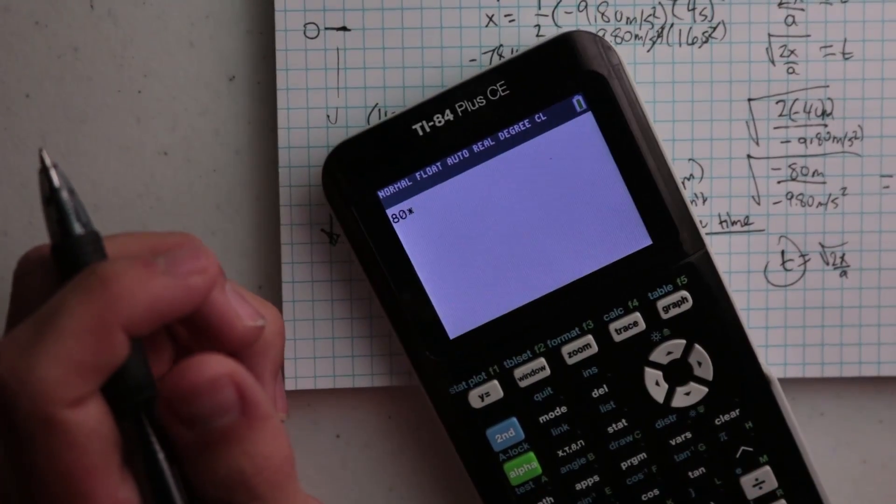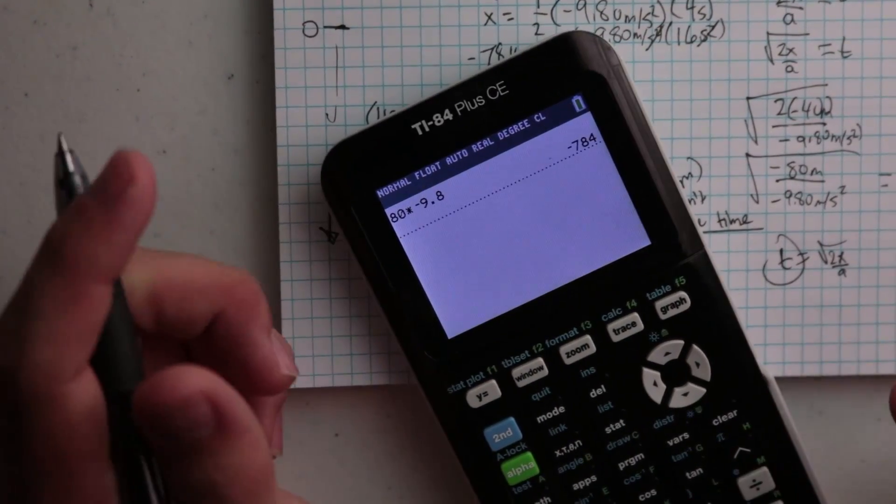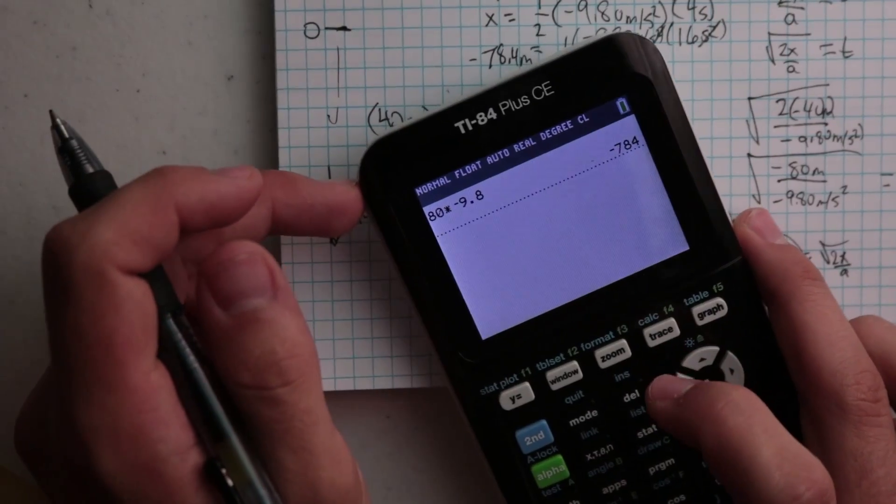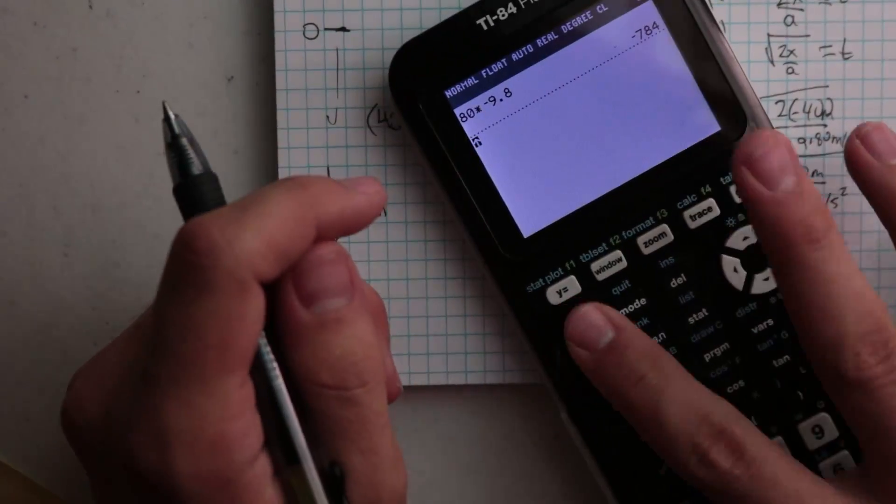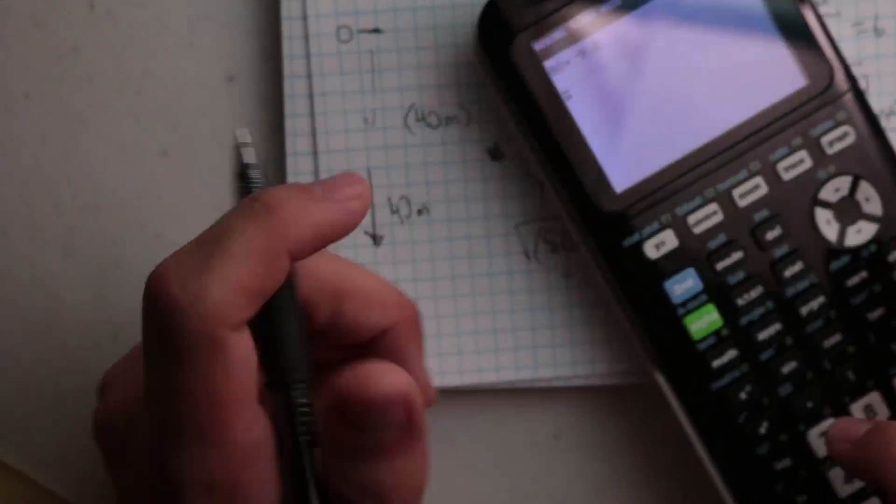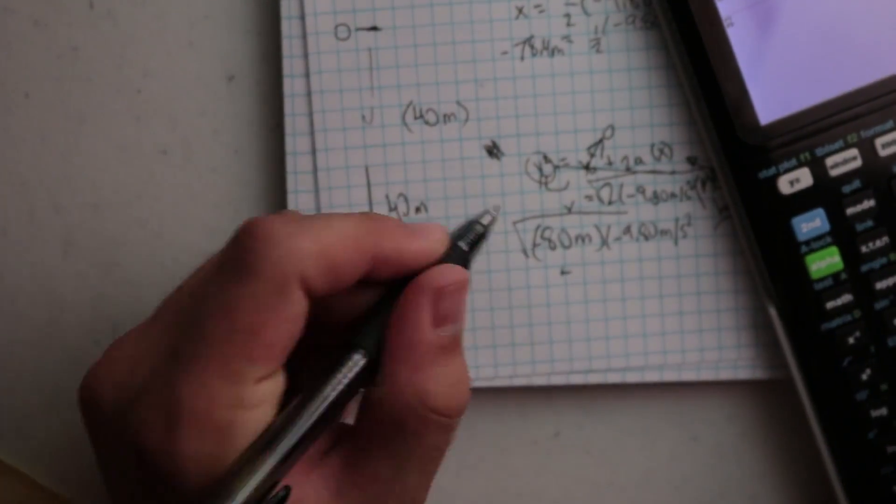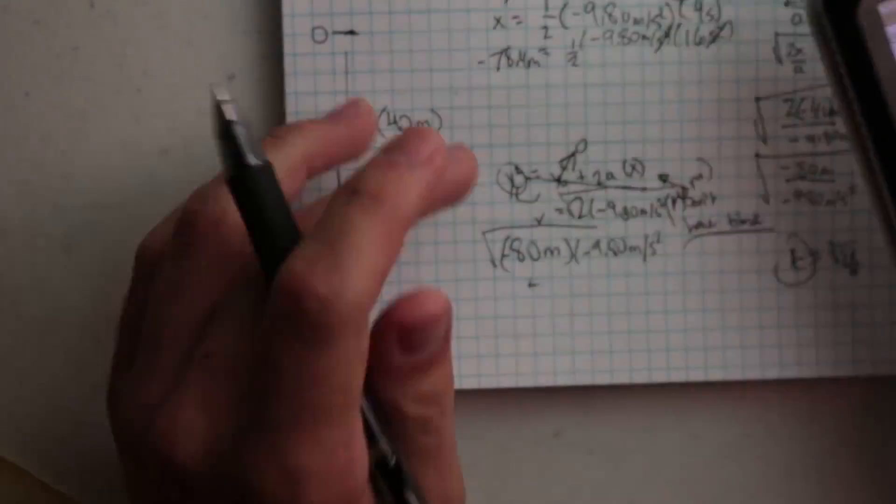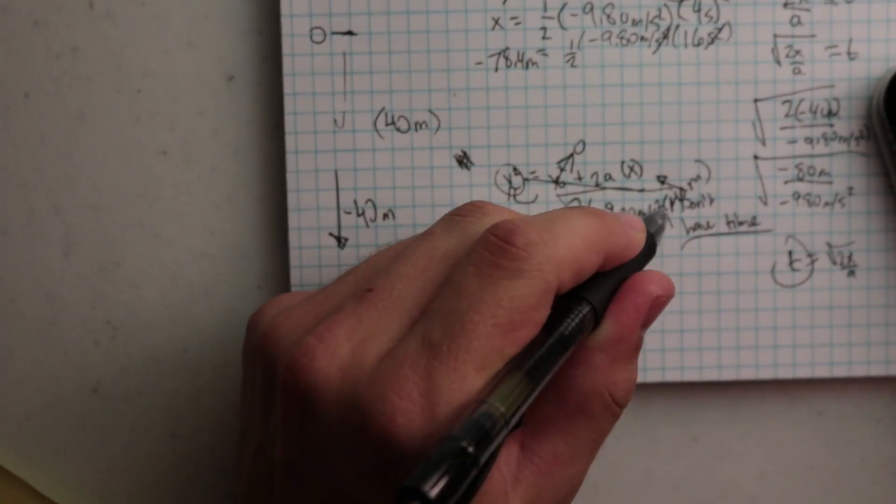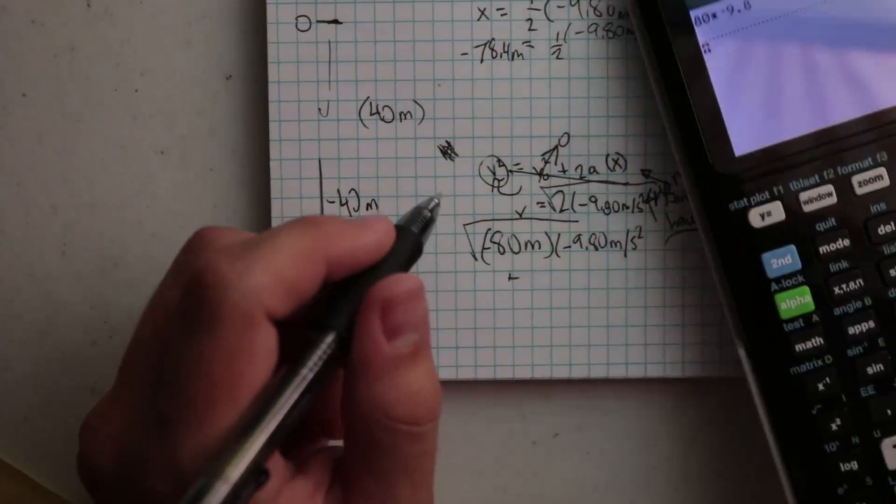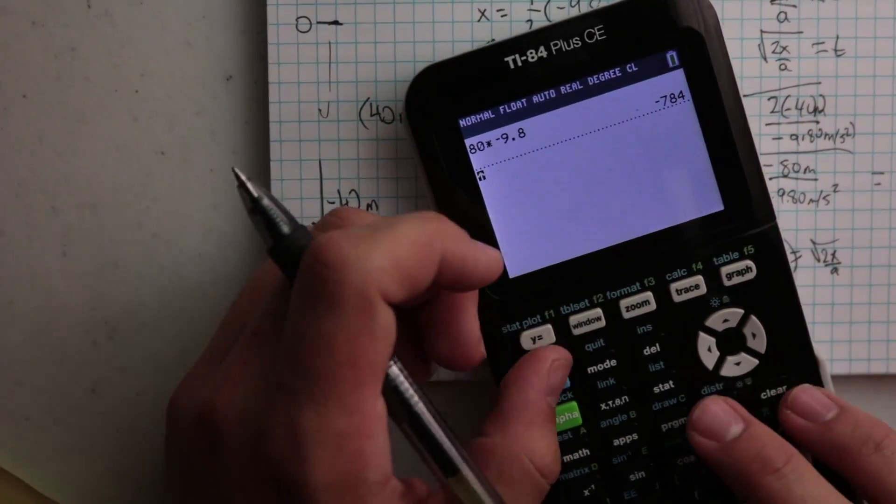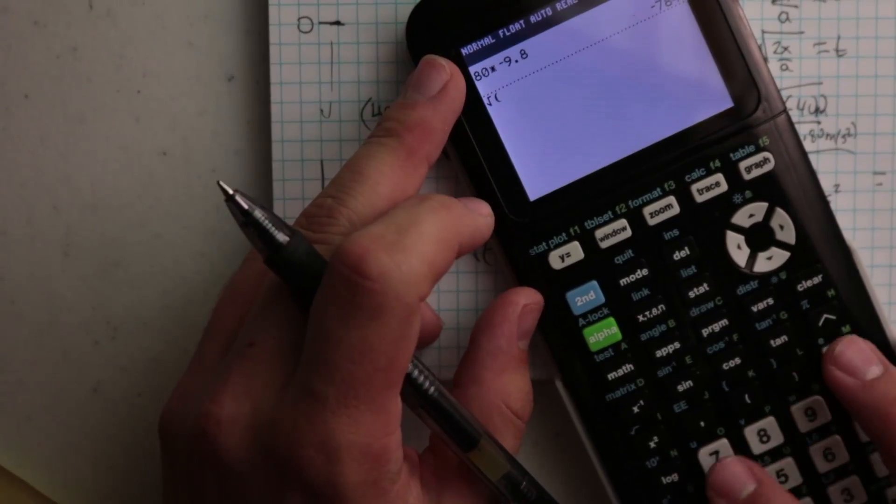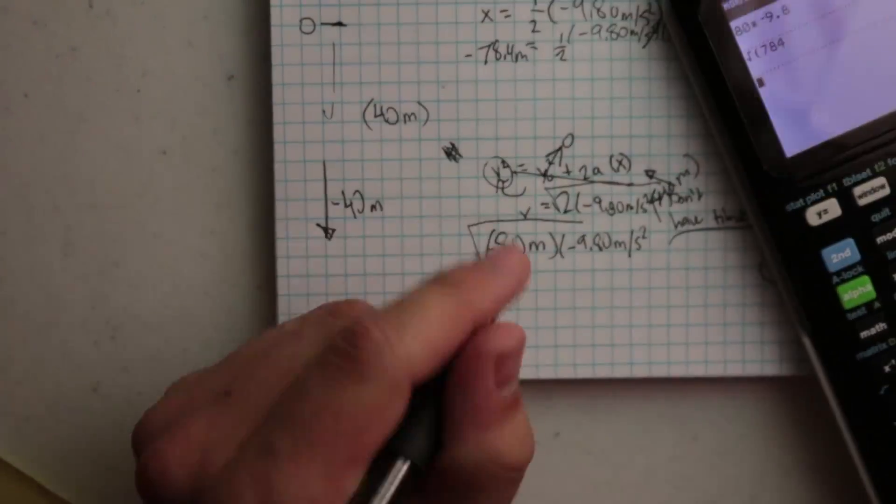So 80 times negative 9.8, that's going to give me 784. So negative 7... and now I'm going to take the square root of that second. Oh, I have to fall negative 40 meters. See, I'm even making a mistake. So negative 40 meters, that's going to make that negative, so that way when they are multiplied, it's positive. So I have the square root of 784, and that's going to be 28.